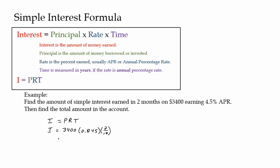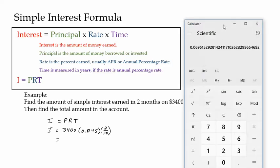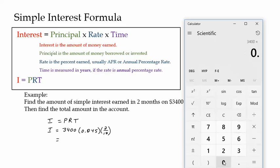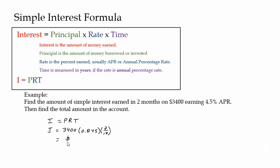I would suggest punching this all into your calculator at once — don't estimate these things because you might have round-off error. We're going to punch in 3,400 times 0.045, then times two-twelfths. You could reduce that to one-sixth, or just times 2 and then divide by 12. That gives us $25.50, and that's the amount of interest that we earned.